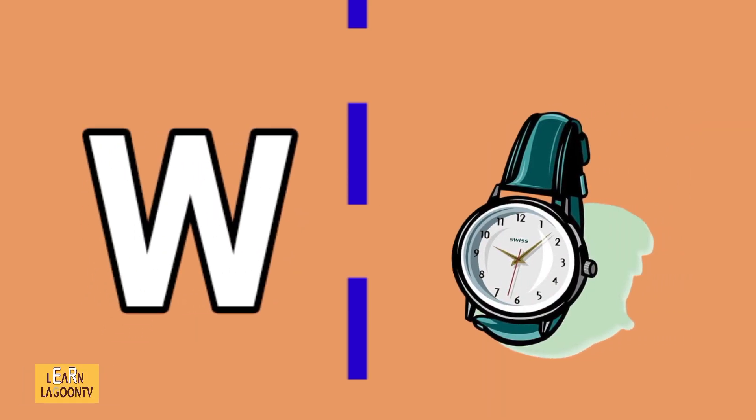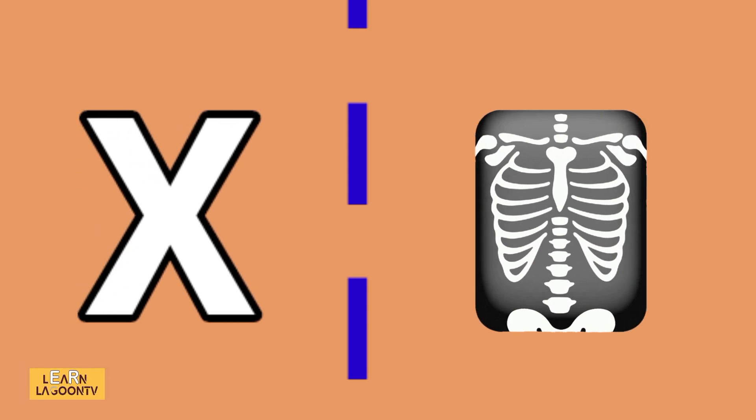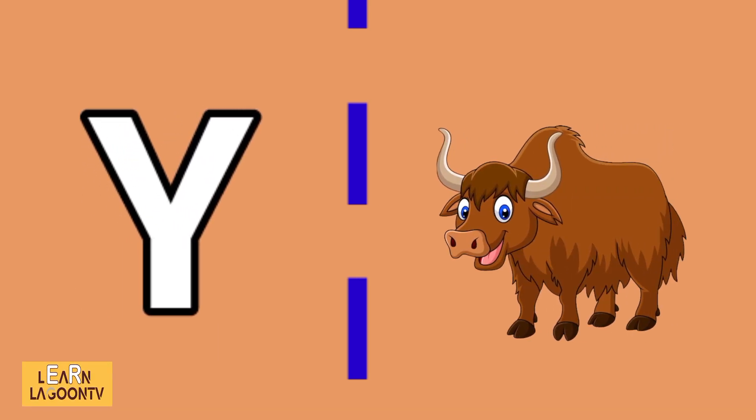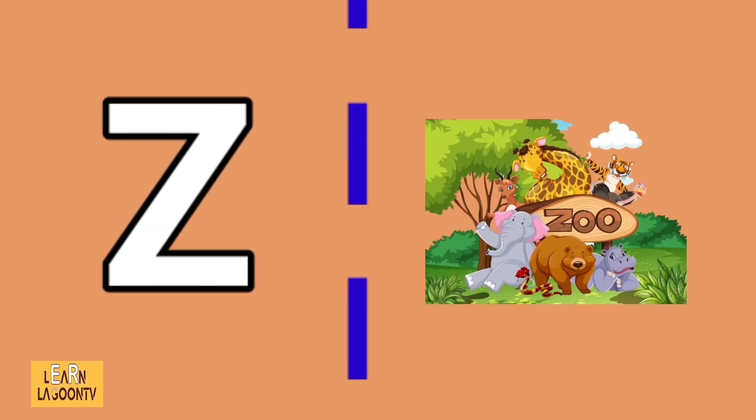W is for watch, X is for x-ray, Y is for yolk, Z is for zoo.